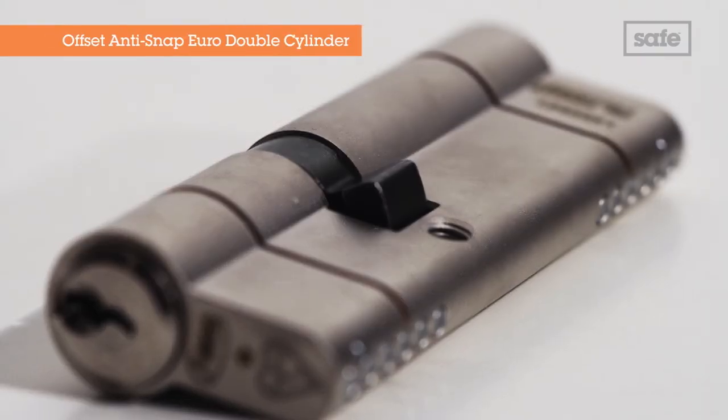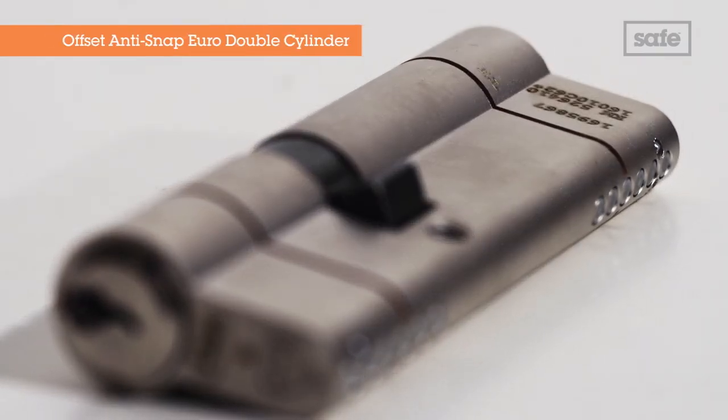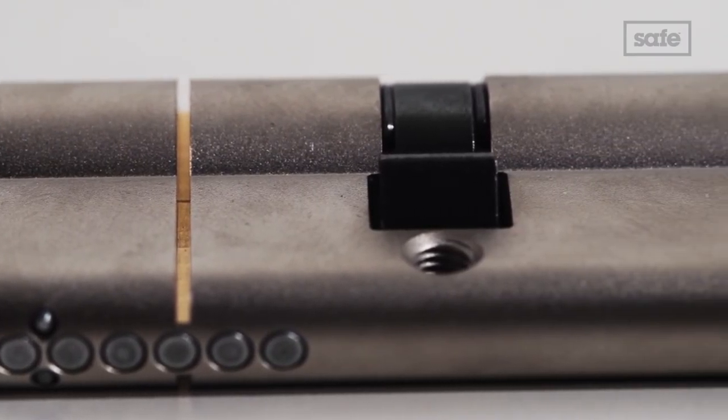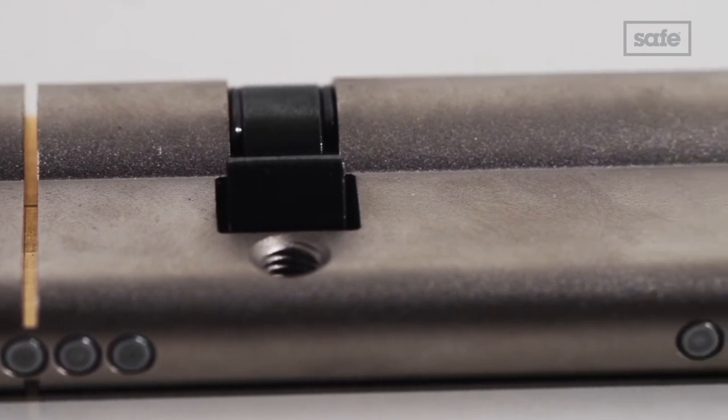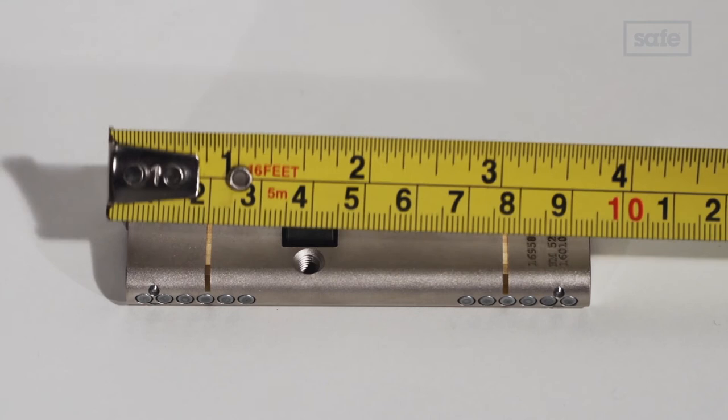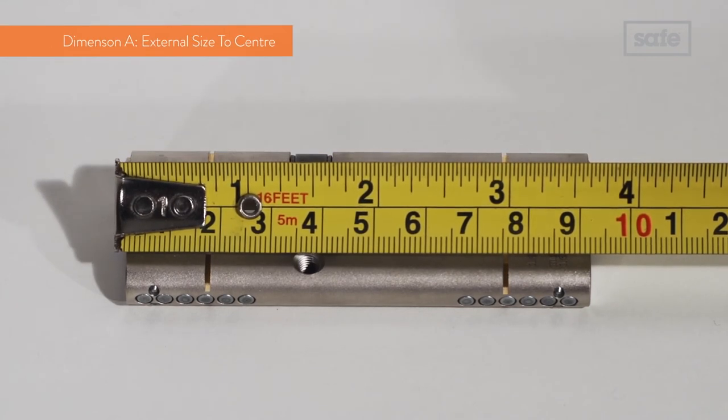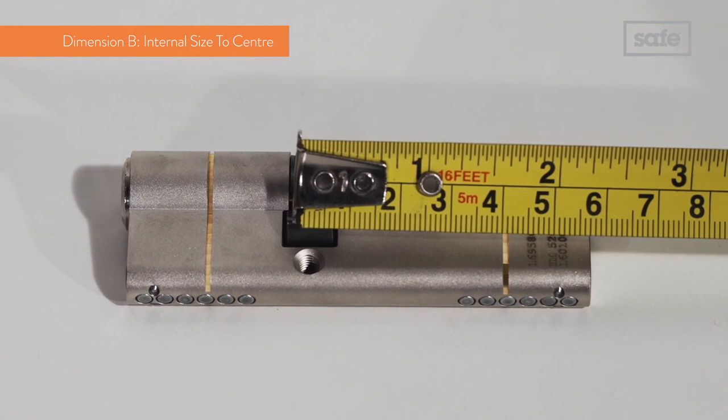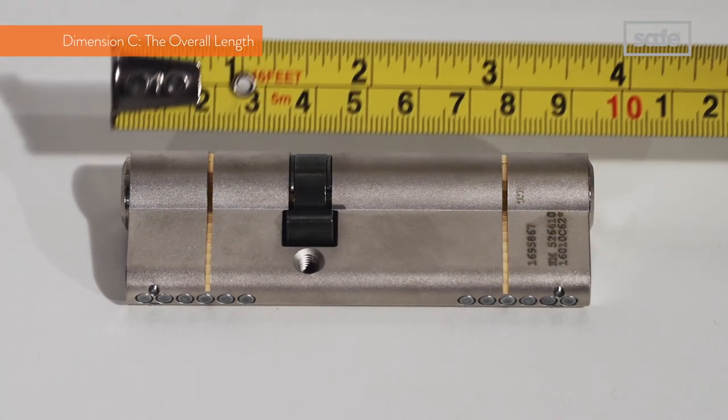Our final example is also an offset anti-snap Euro double cylinder, but this time there are two anti-snap lines, so either side can be used on the external end. Here the measurements you need are A35, B55 and C90.